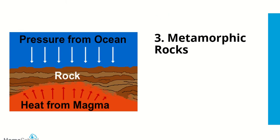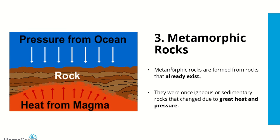Our final type of rock is metamorphic rock. A metamorphic rock is a rock that used to be a sedimentary or igneous rock but changed due to great heat and pressure. Metamorphic rocks are formed from rocks that already exist — like limestone or basalt — which get exposed to great heat and great pressure. The word metamorphize means to change. So if a piece of limestone comes into contact with unbelievable pressure and heat, it could change into marble, for example.